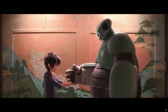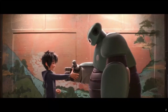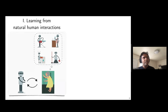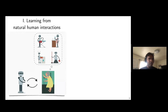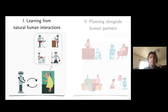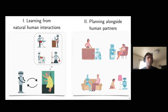To do so, we need to tackle two fundamental challenges. First, how should robots learn from natural human interactions? Consider grandma receiving a brand new robot apprentice — there are tasks she wants done in a specific way, but that's latent in her mind. How can the robot infer these latent preferences from natural feedback like gestures, interventions, and corrections? Second, how should robots plan to accomplish tasks alongside human partners, anticipating how humans move, understanding their intent, and moving in a safe, predictable manner?